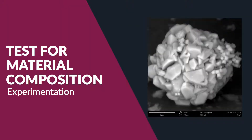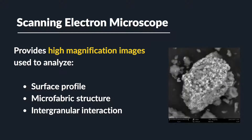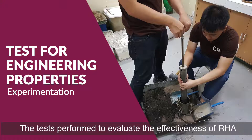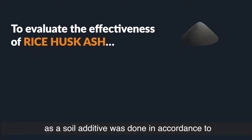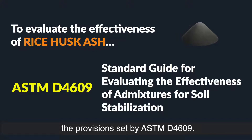For the physical composition of both RHA and soil, a scanning electron microscope test was performed. This test provides images with high magnification, which is used to analyze the microfabric structure of a material. The test performed to evaluate the effectiveness of RHA as a soil additive was done in accordance with ASTM D4609.